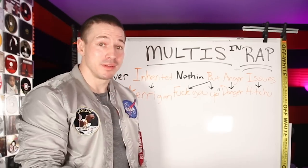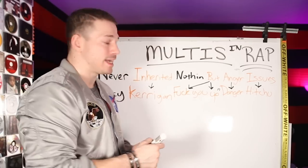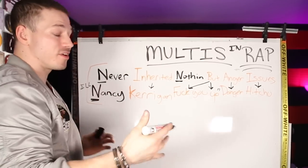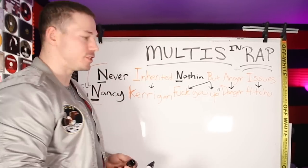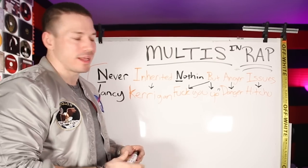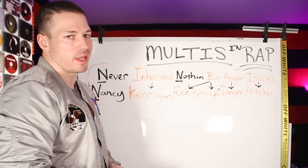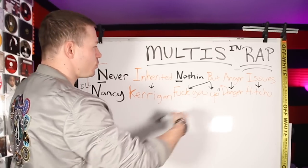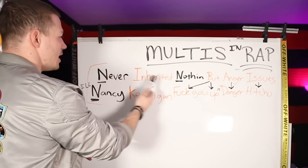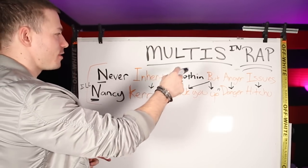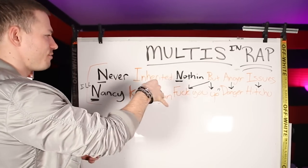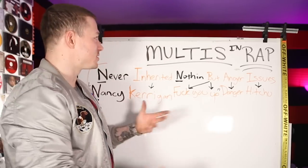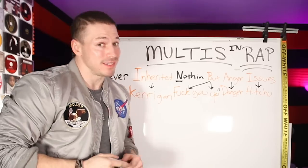It's really that easy. That is how to rap and write multis. On top of that, don't forget we also have alliteration on all the ends — all the non-rhyming words also have alliteration: 'never,' 'nothing,' 'Nancy.' This is how I write. I wrote this in less than a minute and a half. I didn't need to go to a rhyming dictionary, but you can. So: 'Never inherited nothing but anger issues / Like Nancy Kerrigan, fuck you up and danger hit you.' This is how you do it. This is how you write this stuff. That is how to write multis in rap — and you just learned some of the rap basics.